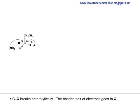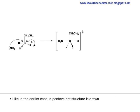The C-X bonds break heterolytically. The bond pair of electrons goes to X. Like in the earlier case, a pentavalent structure is drawn.